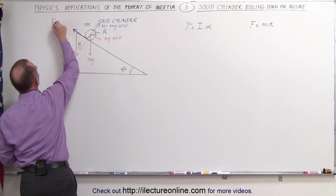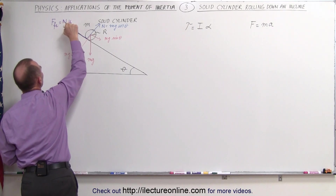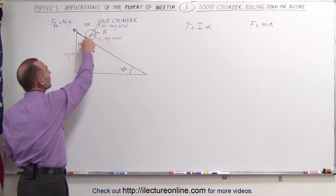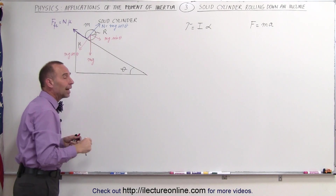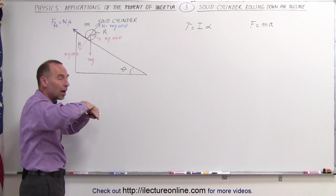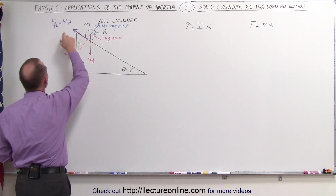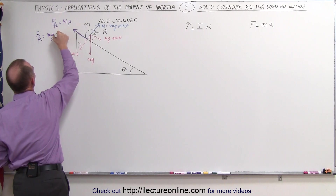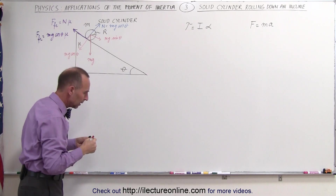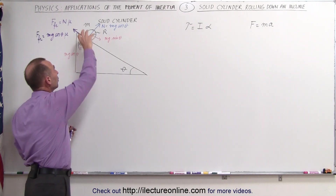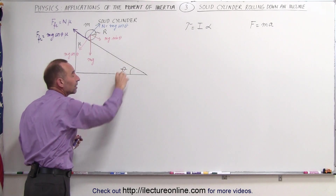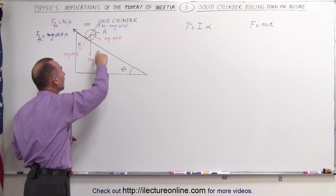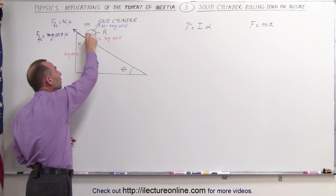The friction force is equal to the normal force times mu, the coefficient of friction. In this case it will be the static coefficient of friction because there's no movement between the surface of the cylinder and the surface of the inclined plane — it's simply rolling over it, making momentary contact, but not sliding over one another. That means the friction force is equal to mg cosine theta times mu. Without the friction force, the cylinder would simply slide down the incline. In this case, it's going to be rolling down the incline, and it's the friction force that causes the torque on the cylinder.